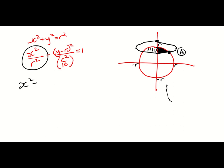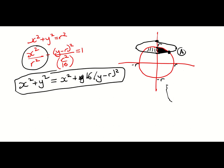So the next task is to say, well, x² + y² = x² + 16(y - r)². I'm going right back to the start of the problem with the equations that I was given in the paper. We can subtract x² from both sides. We have y² = 16(y - r)².